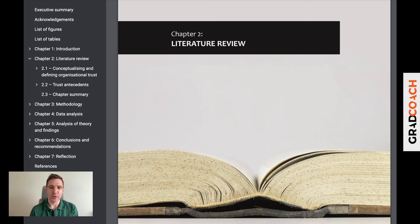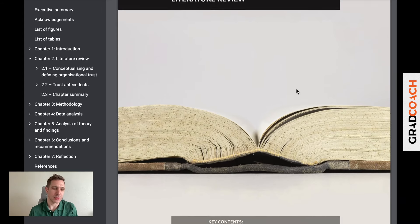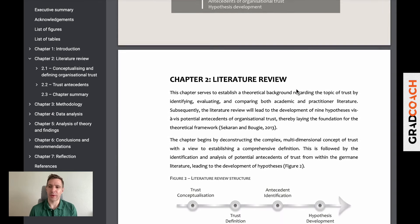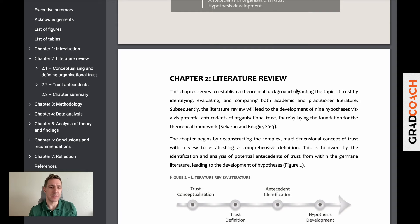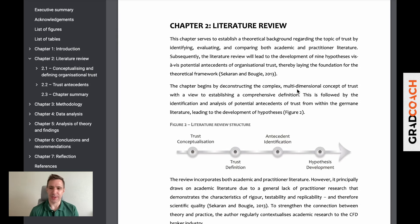Now that we've looked at the literature review template, let's look at an actual literature review chapter from a dissertation. This literature review doesn't follow the template 100% because every university has its nuances, but it still has all the core components. It's part of a master's level MBA dissertation. The research aim involved identifying factors that influenced whether a customer was inclined to trust an investment broker — specifically a CFD broker. Fundamentally, this research was all about figuring out what makes people trust investment brokers.